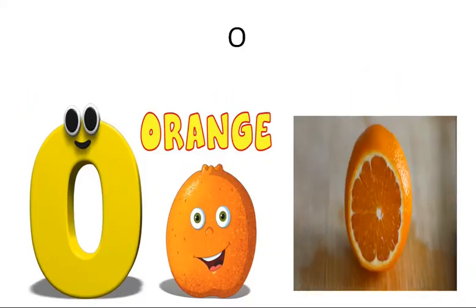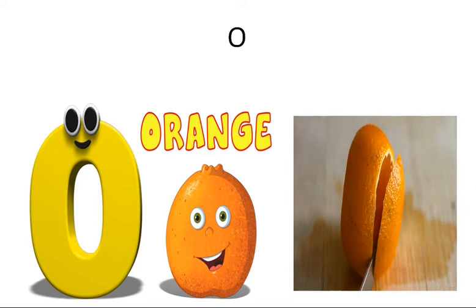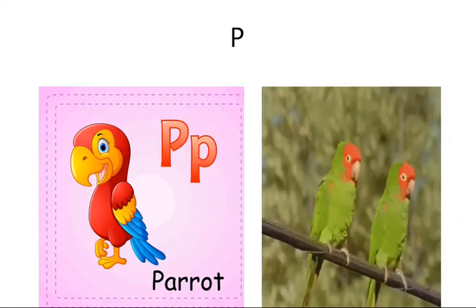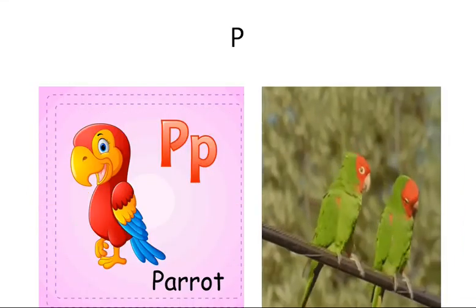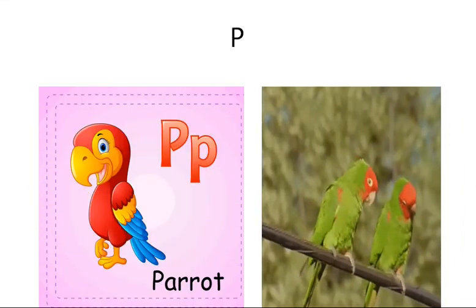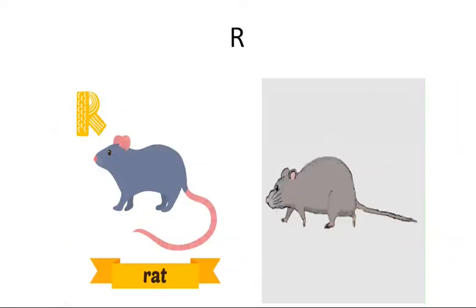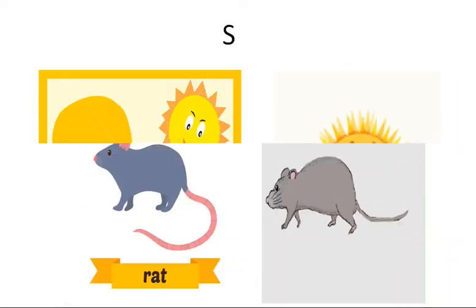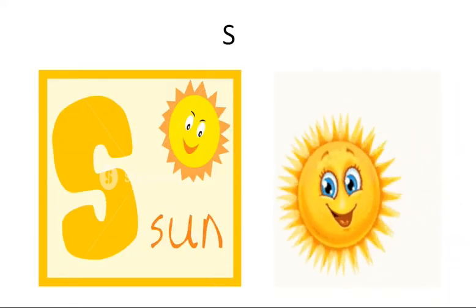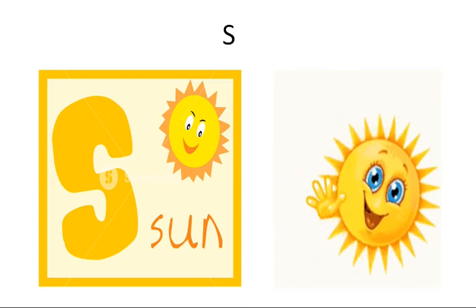O for orange, P for parrot, Q for queen, R for red, S for sun.